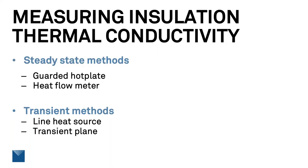We'll talk about the measurement of thermal conductivity in insulating materials today. Instruments to measure thermal conductivity fall into two classes: steady state methods and transient methods. Steady state methods are more typically used to measure thermal conductivity of insulating materials — both guarded hot plates and heat flow meters are used for that. The transient methods, like the line heat source, are widely used for measuring thermal conductivity in materials that have higher thermal conductivities than insulation, but for reasons I'll discuss, they haven't worked well for insulation in the past.